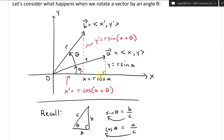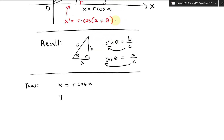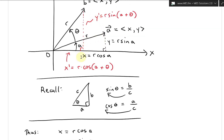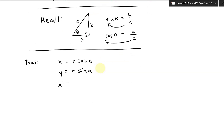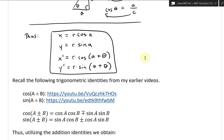Putting all the components together: x = r·cosine(a), y = r·sine(a), x' = r·cosine(a + theta), and y' = r·sine(a + theta). Let's box these out as a nice neat package to work with.